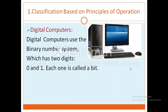Next one is digital computers. A digital computer operates on digital data, such as numbers. It uses the binary number system in which there are only two digits: 0 and 1. Each one is called a bit. Digital computers are best suited for solving complex problems in engineering and technology. They use the binary number system with two digits, 0 and 1, each called a bit.